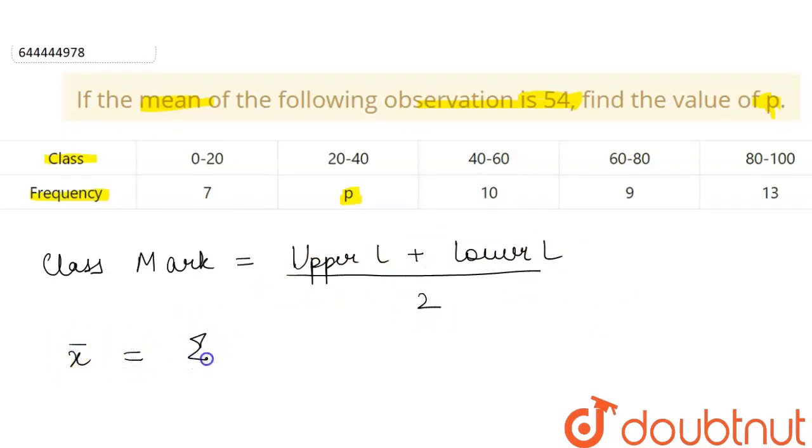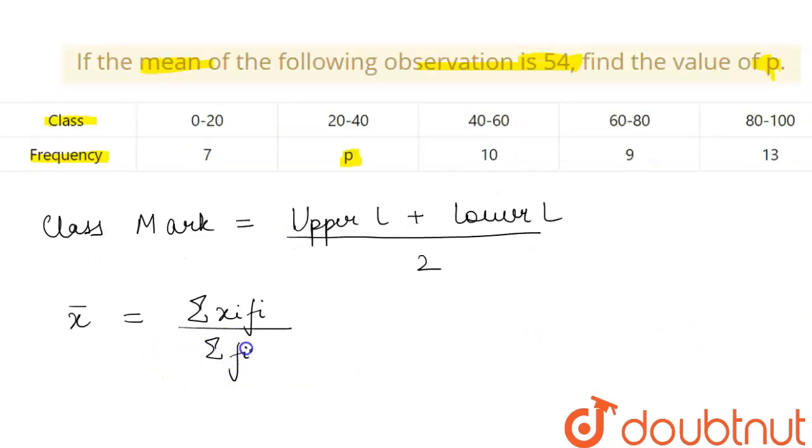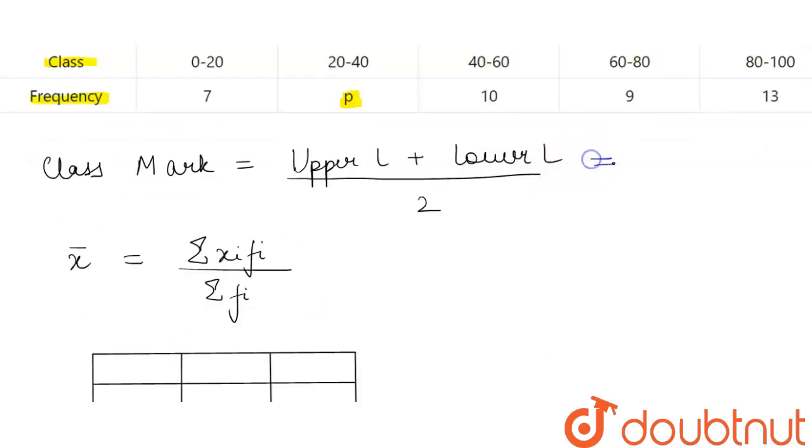So firstly we will form a table. We represent our class mark by xi. Our first column will be xi, then we will have fi, and then xi into fi.